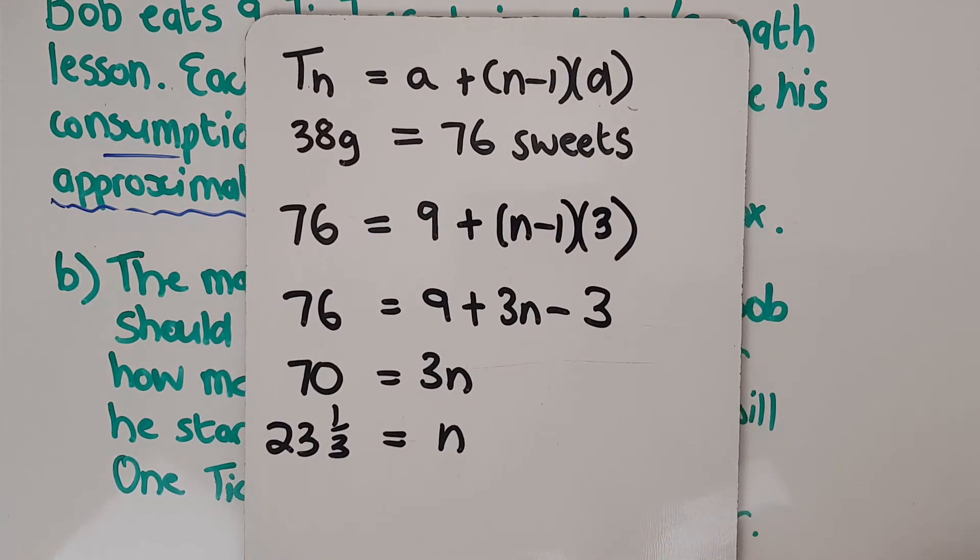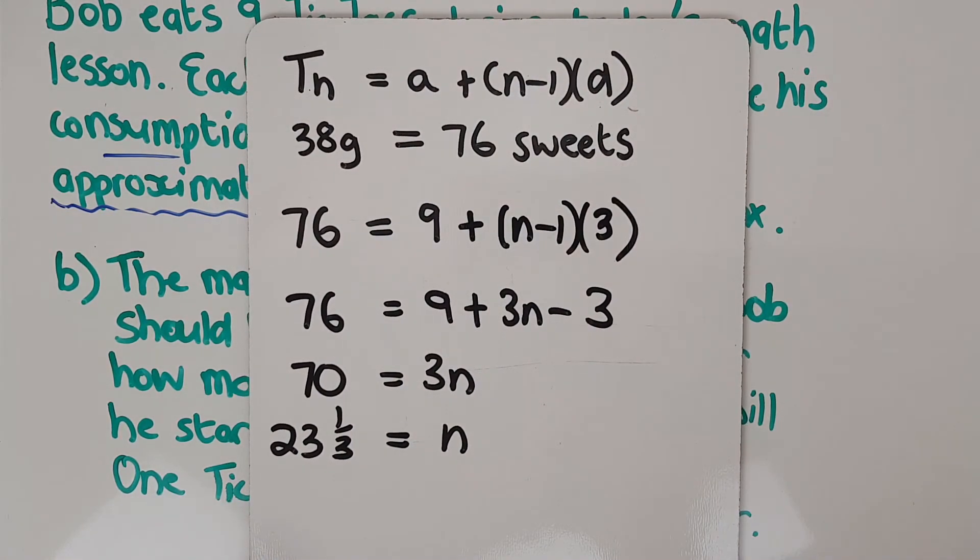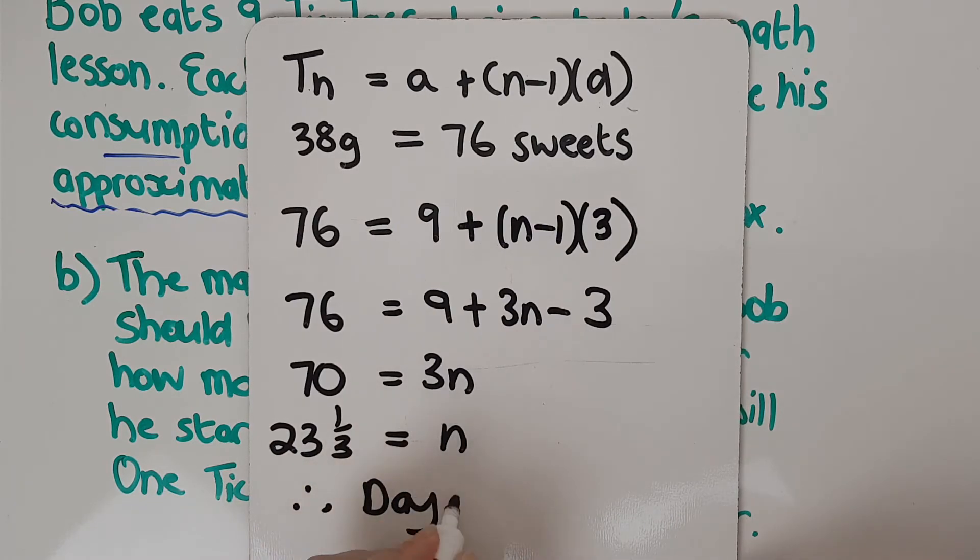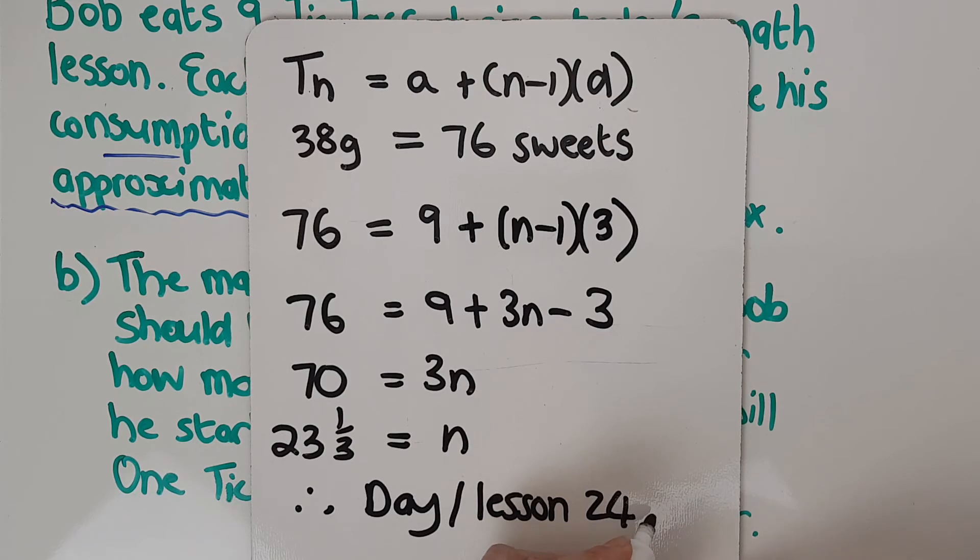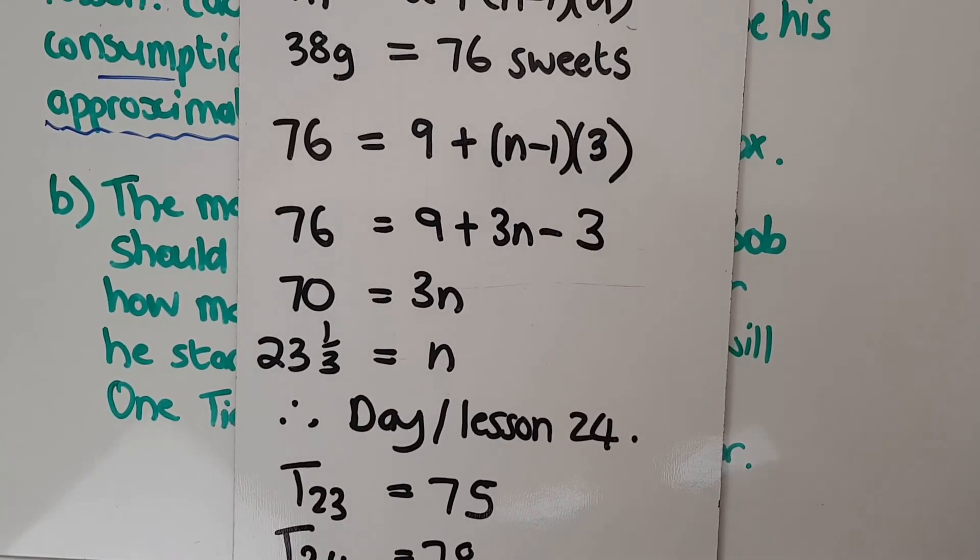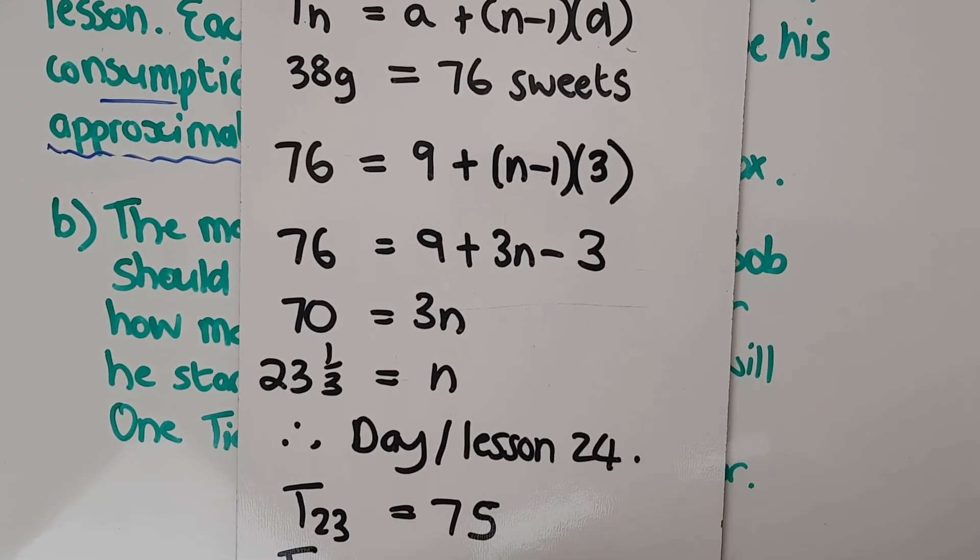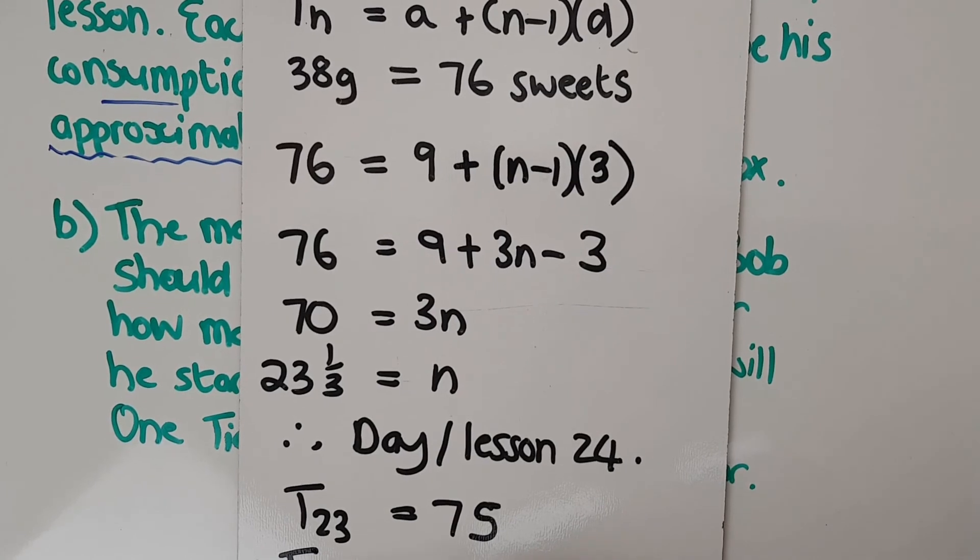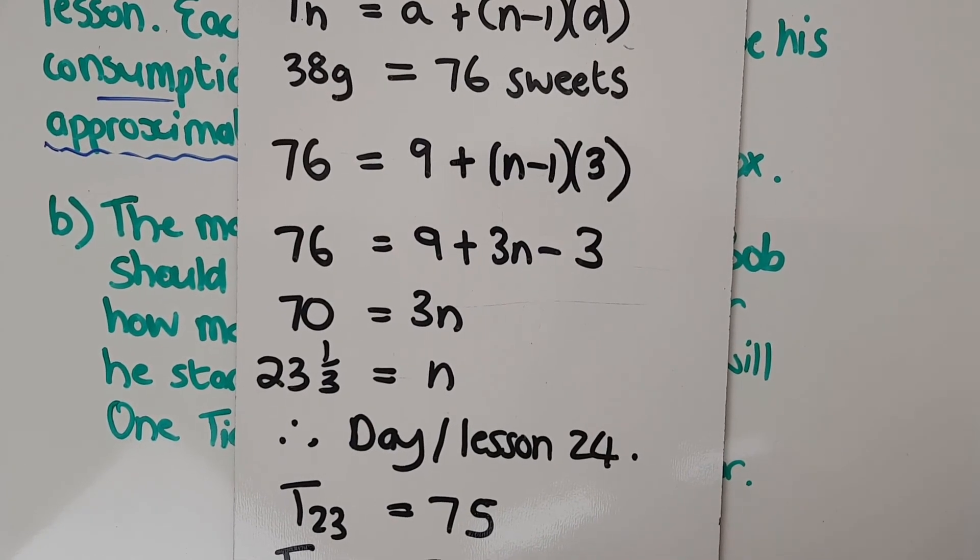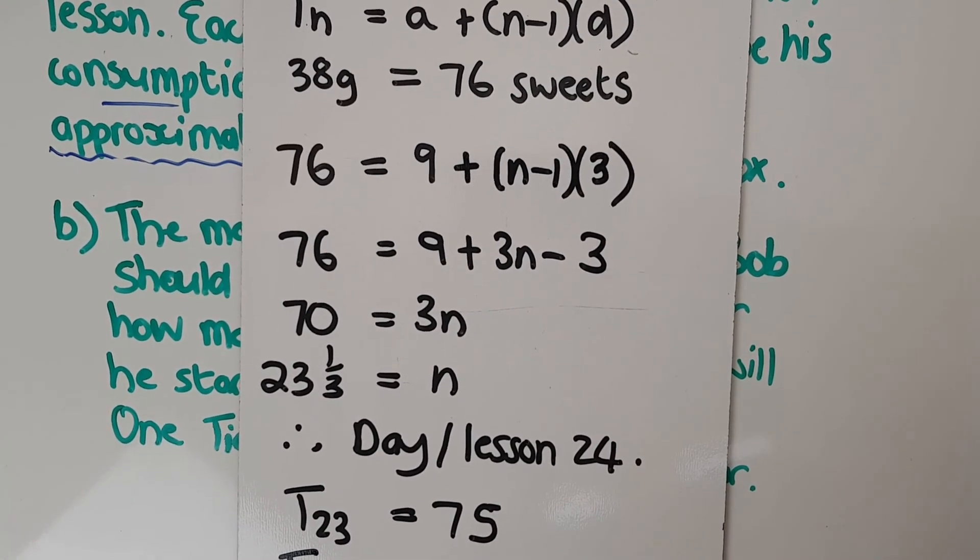So 23 and a half lessons in. So that means it's going to be, it's going to happen on day or lesson 24. If you sub in 23, so if I work out the day 23, he gets to 75. And day 24 is 78. So clearly, only on day 24 or lesson 24 does he actually exceed the amount. And that was what the question asked.